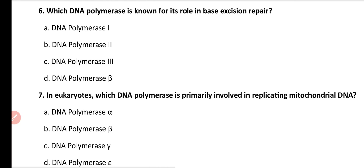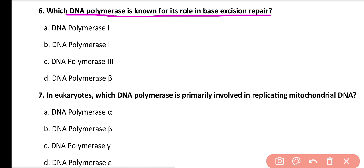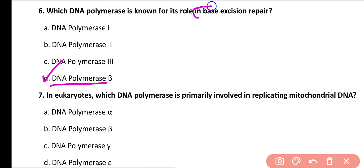Question number 6. Which DNA polymerase is known for its role in base excision repair? DNA polymerase 1, 2, 3, or beta? Correct answer is option D. DNA polymerase beta in eukaryotes is responsible for the role in base excision repair.